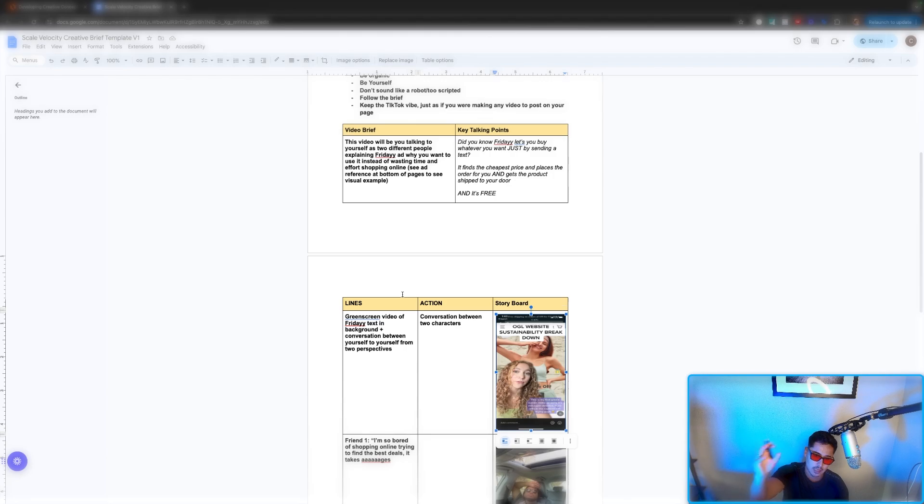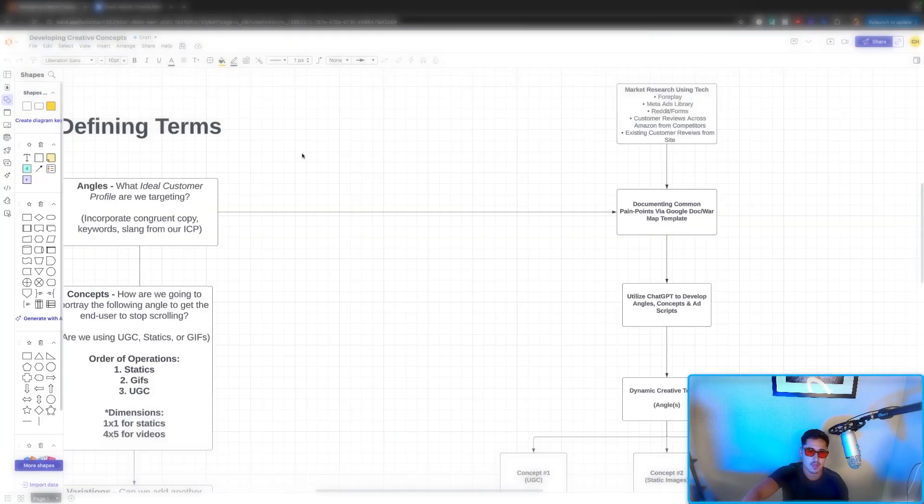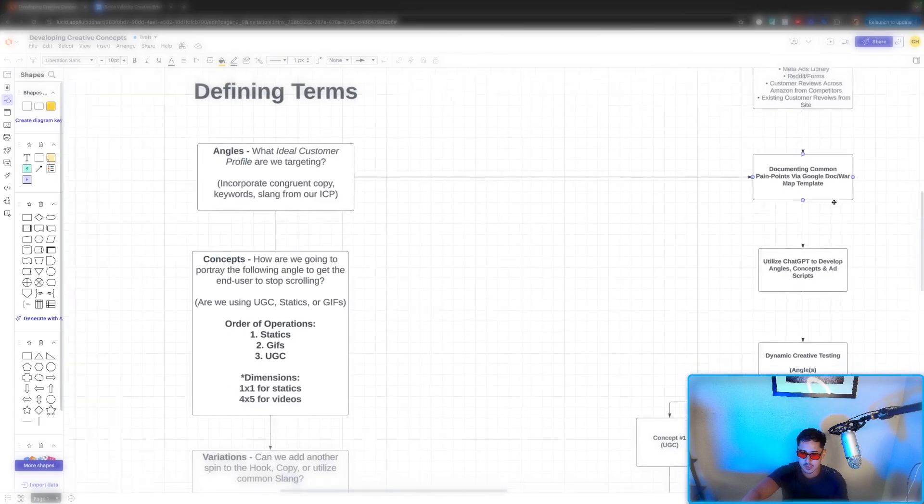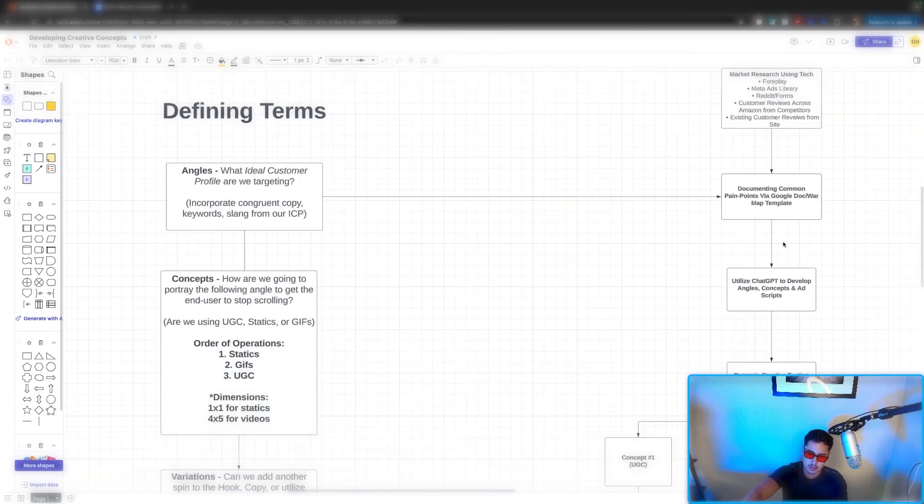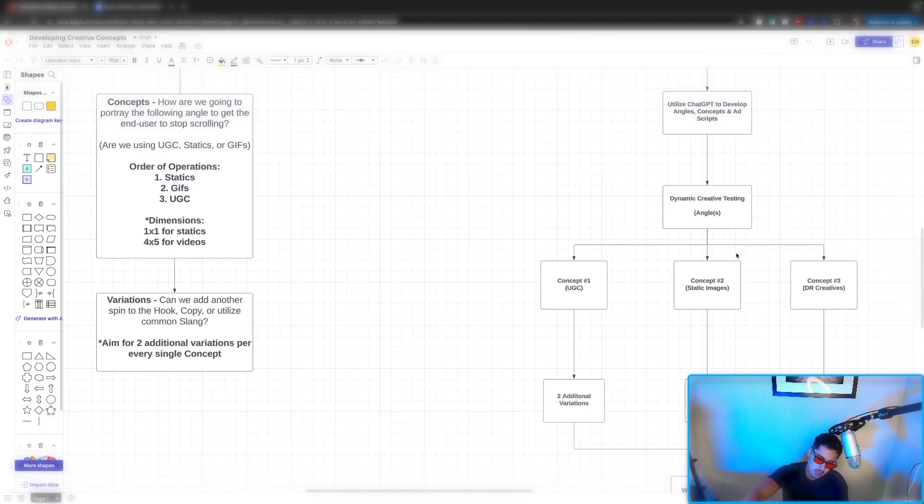So this is for like a UGC creative brief concept. For static, you don't need as much detail. But I say this to say these documents, this right here, this streamlined process, where the creator is just research, then builds up pinpoints, then uses GPT, then creates concepts.